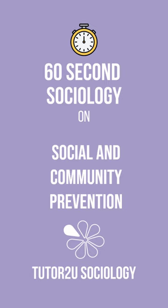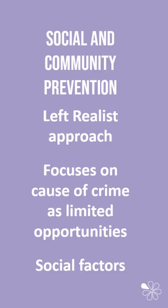In this 60 Second Sociology we're looking at social and community prevention. Social and community prevention is a left realist approach to the prevention of crime. Left realism focuses on the cause of crime and sees this as being the result of limited opportunities in society. The left realist approach largely focuses on social factors that lead to individuals committing crime.